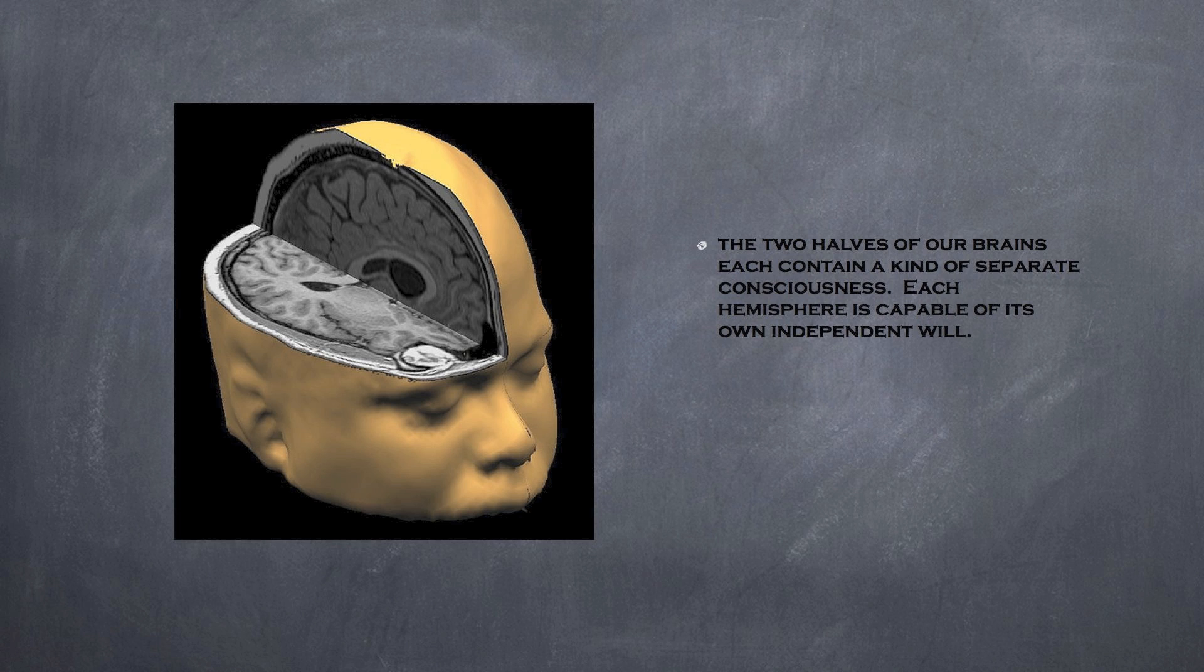The two halves of our brains each contain a kind of separate consciousness. Each hemisphere is capable of its own independent will.